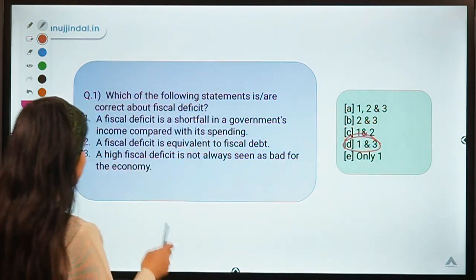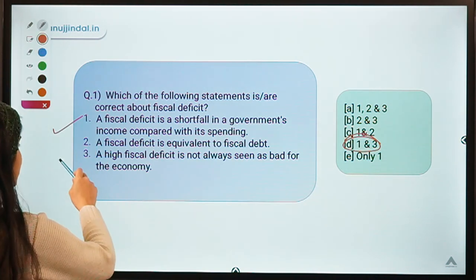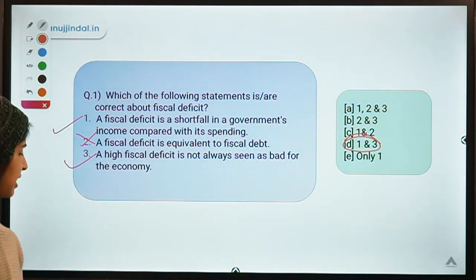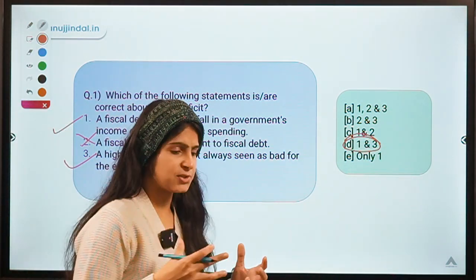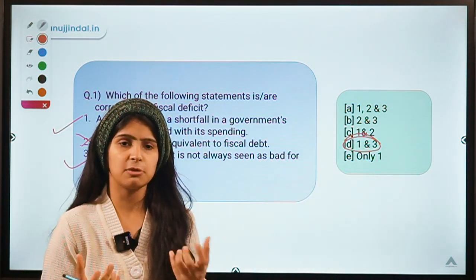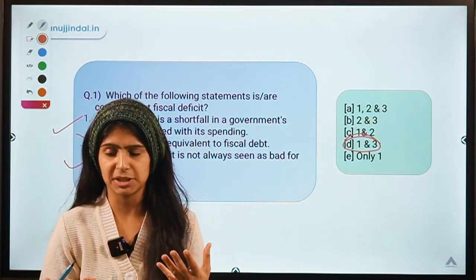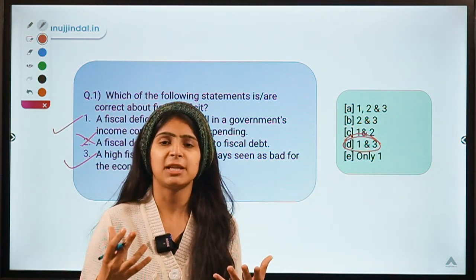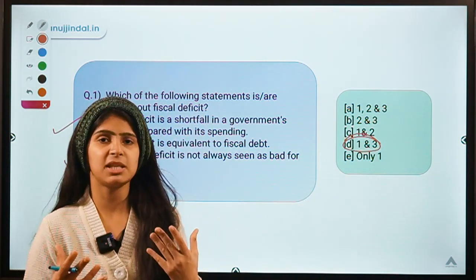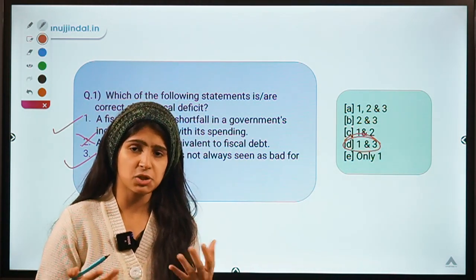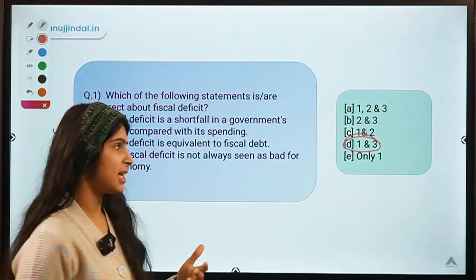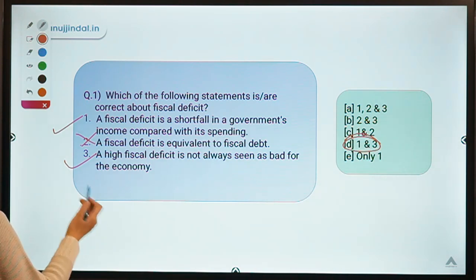Option D means statements one and three are correct, but statement two is not correct. Fiscal deficit is a term whose meaning most of you could be knowing. In simple sense, it is the excess of your expenditure over your income.